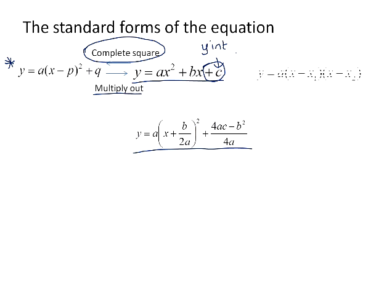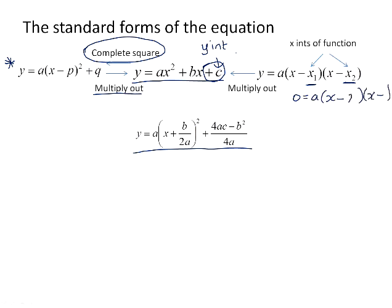The third and final form of the parabola is the factorized form. When multiplied out, the factorized form also gives back ax squared plus bx plus c. The factorized form is useful because the two values in the factors are actually the x-intercepts of the function. When you let y equal 0, for example with x minus 2 and x minus 3, your x-intercepts are x equals positive 2 or x equals positive 3. So if you are given the x-intercepts, it's easiest to substitute them into the factorized form and then multiply out.